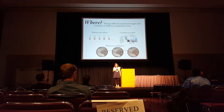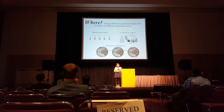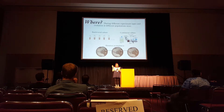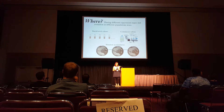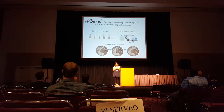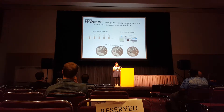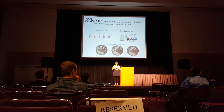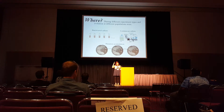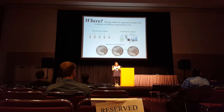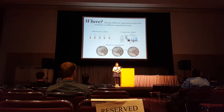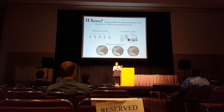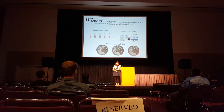We also see ploidy drive during different experiment types and population sizes. Our experiments are mostly done in batch culture — Lenski-style serial transfer nutrient experiments. We thought maybe it was something about batch culture selecting for a different ploidy, but we also see it in continuous culture experiments, where yeast are evolved in culture vessels with constantly replenished nutrients. And we see it in mutation accumulation experiments under very low population sizes. So we see it at high population sizes in batch and continuous culture, and also in mutation accumulation experiments.